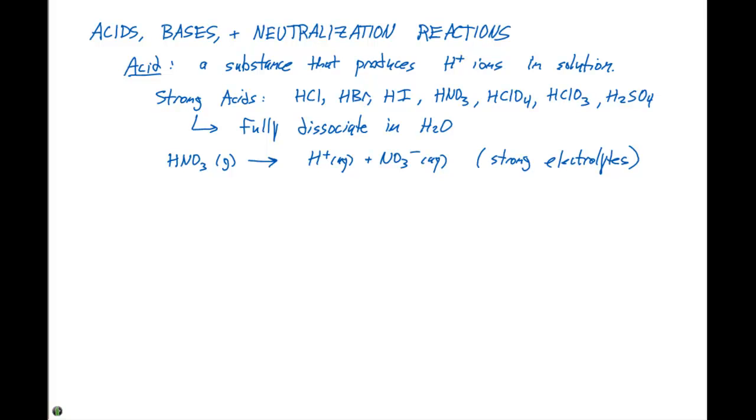So by knowing all of these seven strong acids, you're gonna then know what the weak acids are, because every other acid is weak. And most of the acids that we're gonna analyze are gonna start with an H. Notice each of the seven strong acids, its formula begins with an H. We can then define weak acids to partially dissociate in water.